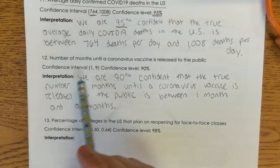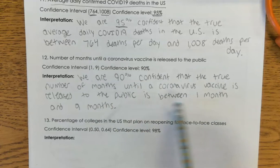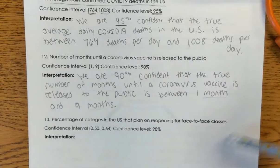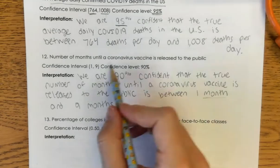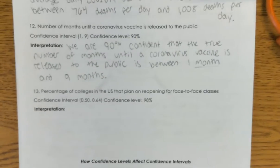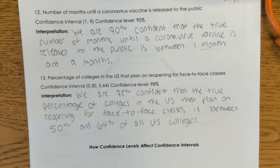Here is my interpretation: We are 90% confident that the true number of months until a coronavirus vaccine is released to the public is between one month and nine months. Notice I included my unit after the number for more clarification. On the AP exam, you get points on the free response questions for context — words that tell us what the problem is talking about. So the word 'months' would be context and you would get a context point for that. Now for the last problem: We are 98% confident that the true percentage of colleges in the U.S. that plan on reopening for face-to-face classes is between 50% and 64% of all U.S. colleges.